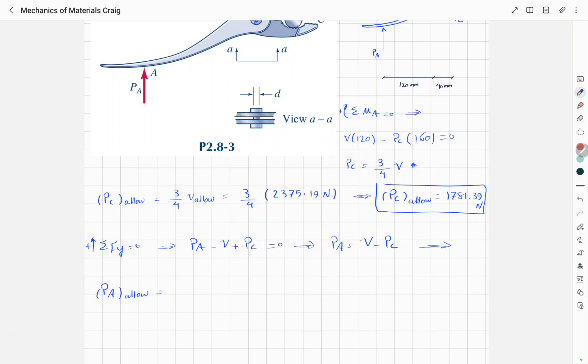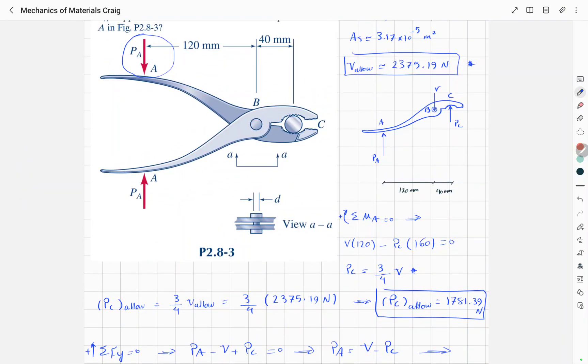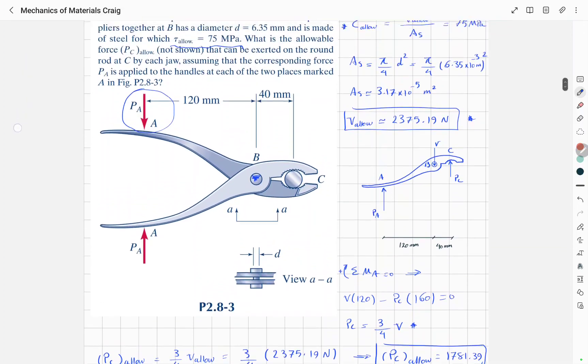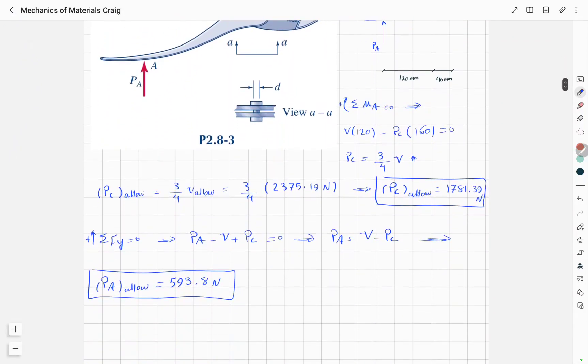And this will give us a Pa allowable of 593.8 newtons. This means that the maximum force that we can apply to the handles of these pliers so that the shear stress in this pin B doesn't exceed 75 megapascals is around 594 newtons, which is around 60 kilograms.